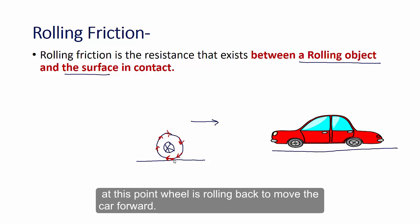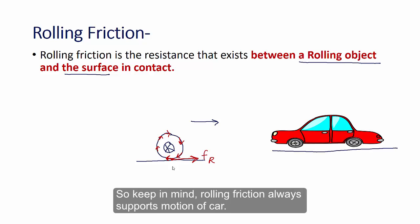At this point wheel is rolling back to move the car forward. So direction of rolling friction would be forward. This way. We can represent rolling friction as FR. So keep in mind rolling friction always supports the car's motion.